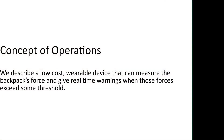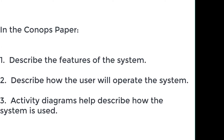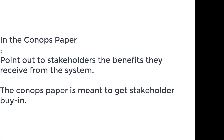Now we can start on our CONOPS paper. We can describe a low-cost wearable device that can measure the backpack's force and give real-time warnings when those forces exceed some threshold. We can explain what features the system has and how the user operates the device to fix the problem. We can use an activity diagram that illustrates how the system is used. We also need to address any stakeholder anxieties in our CONOPS to ensure all stakeholders buy in, because if we don't get all stakeholders' buy-in we'll have a rough time getting the system accepted.